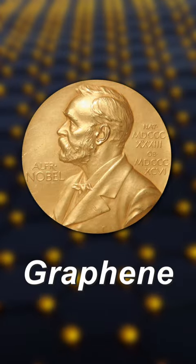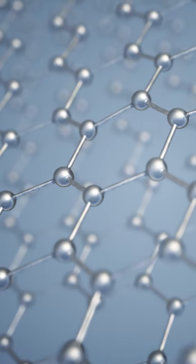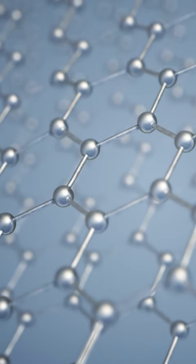Graphene is a 2010 Nobel Prize winning material that consists of carbon atoms in a hexagonal pattern, creating a two-dimensional carbon nanomaterial in a honeycomb lattice.